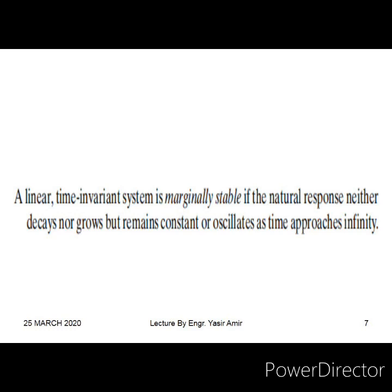A stable system has poles on the left-hand side of the j-omega axis — they have negative real parts — so the exponential has a negative number multiplied by time, and the exponential decays to zero eventually. If the pole is on the right-hand side of the j-omega axis, it has a positive real part, and the transient response will grow with the passage of time — the system is unstable and its response becomes unbounded after a certain period of time.